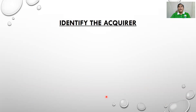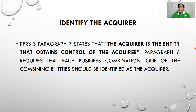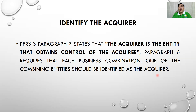We need to identify the acquirer. According to PFRS 3, the acquirer is the entity that obtains control of the acquiree. Paragraph 6 requires that in each business combination, one of the combining entities should be identified as the acquirer. Why? It is very important to identify the acquirer in order to know what accounts will be used, because most journal entries are directed to the books of the acquirer. In merger or consolidation, only one company remains — which is the acquirer.